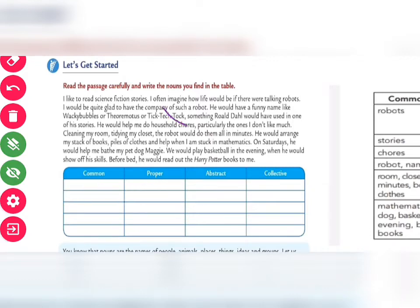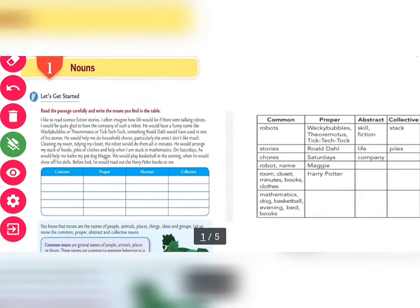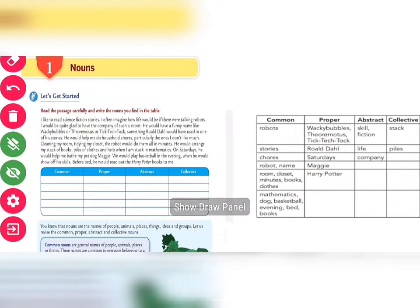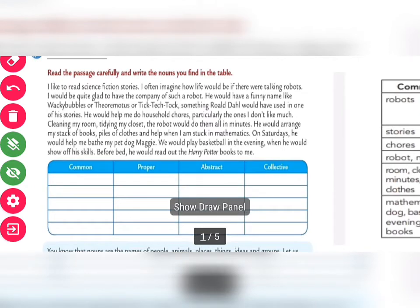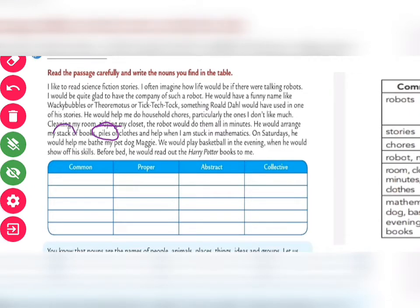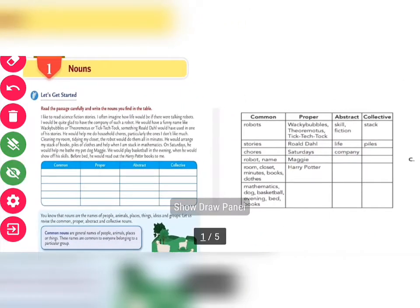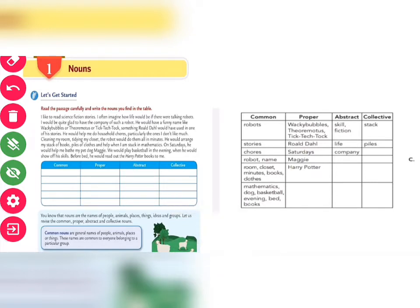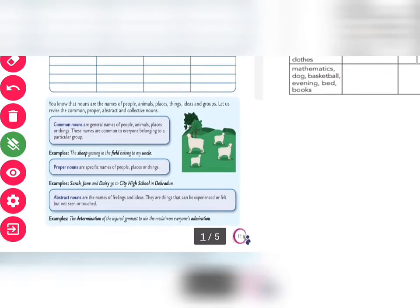So I told you about common noun, proper noun, and abstract noun. Now what about collective noun? When you read this passage, you will see that 'piles of clothes' and 'stack of books' — these words you will write under collective noun. I have already written the answers in a table here, so if you have not followed the explanation, you can go through the answers. Exercise A is now completed.